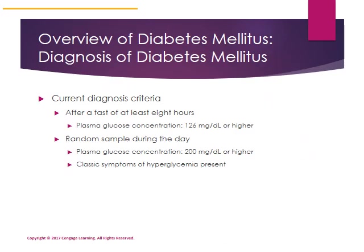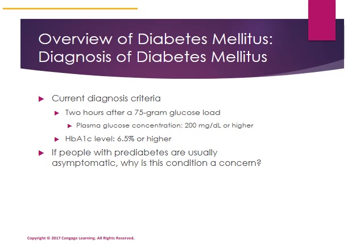Current diagnosis criteria include measurement of glucose after at least an eight-hour fast or a random sample during the day. If fasting plasma glucose is greater than 126 milligrams per deciliter, that is diagnostic of diabetes mellitus. If a random sample is greater than 200 milligrams per deciliter along with classic symptoms, that is also indicative of diabetes mellitus. Diabetes can also be diagnosed using the oral glucose tolerance test or the HbA1c percent level.